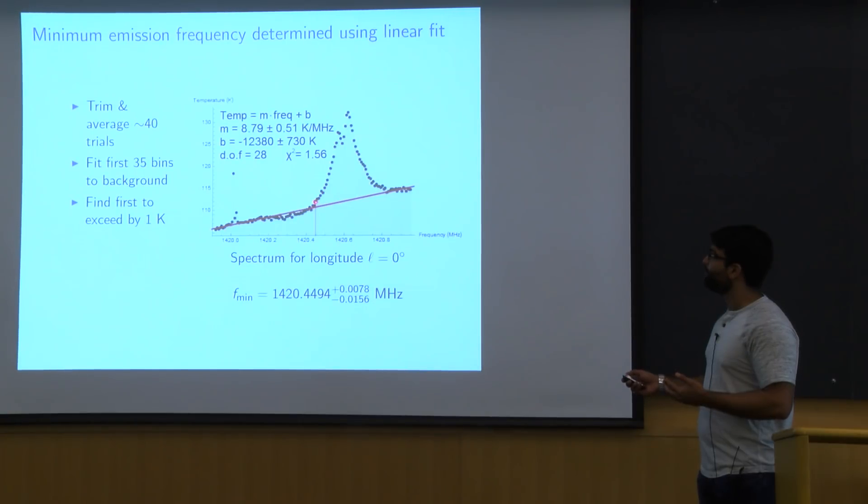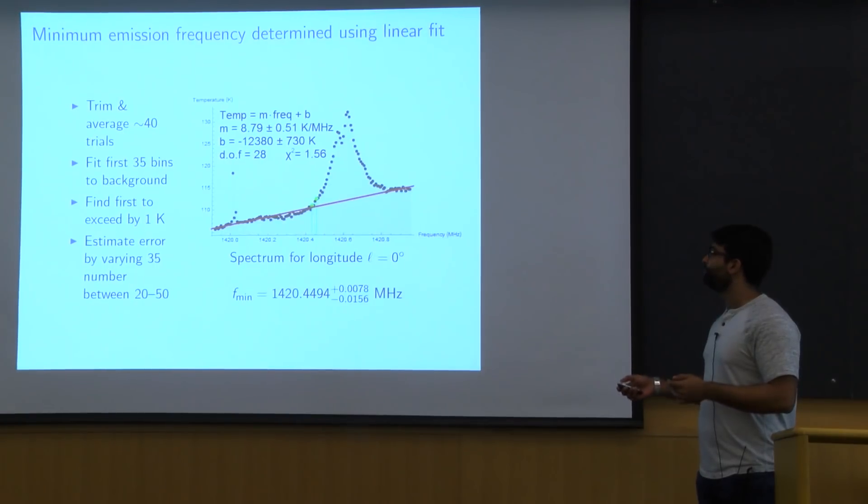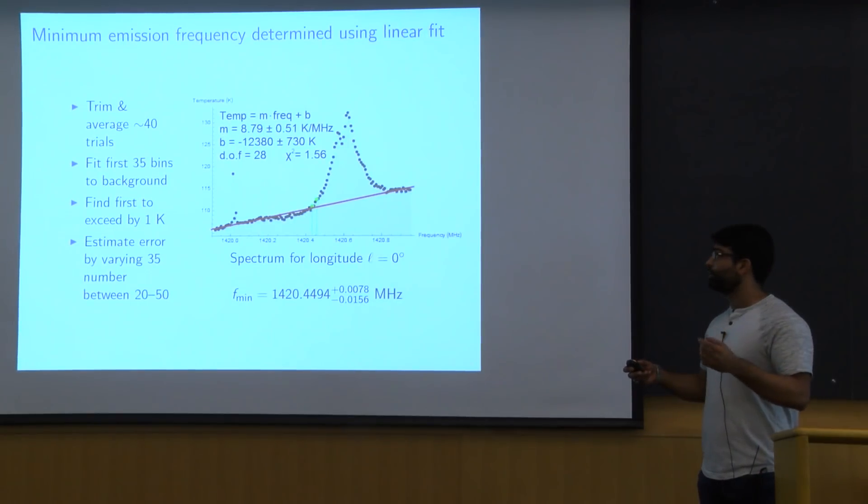Then we're going to find the first point which exceeds this background by some fixed amount one Kelvin. And we say that that is going to be our minimum emission frequency. So in this case, this is this 1420.4494 megahertz. And we can estimate the error on this method by basically fudging this 35 number. So see what happens if we use the first 20 bins versus see what happens when we use the first 50 bins instead. And so the number we get out of it will shift a little bit up or a little bit down. In this case, it shifted one bin up and two bins down. And so that gives us an error on what this kind of method will give for a minimum emission frequency. And by default, if shifting around this 35 number doesn't change anything, then we'll just say that the error is just the bin width itself.